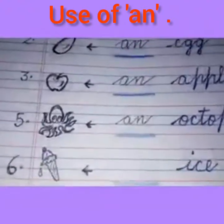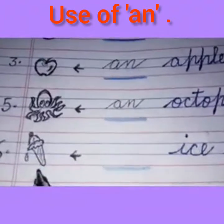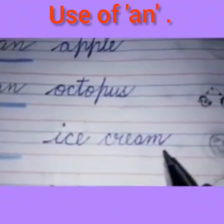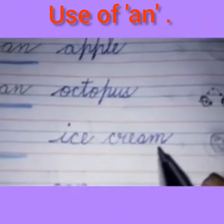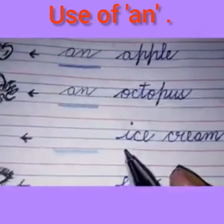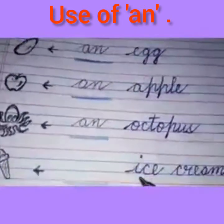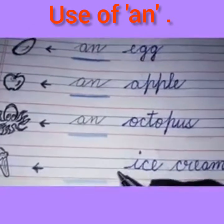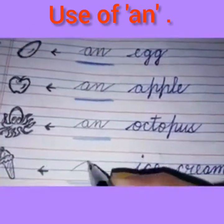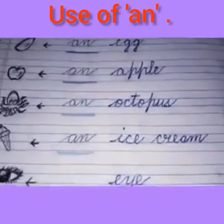Yummy! This is the picture of an ice cream. I-C-E C-R-E-A-M, ice cream. I is also a vowel, so for ice cream what will we write? We will write 'an' before ice cream: an ice cream.